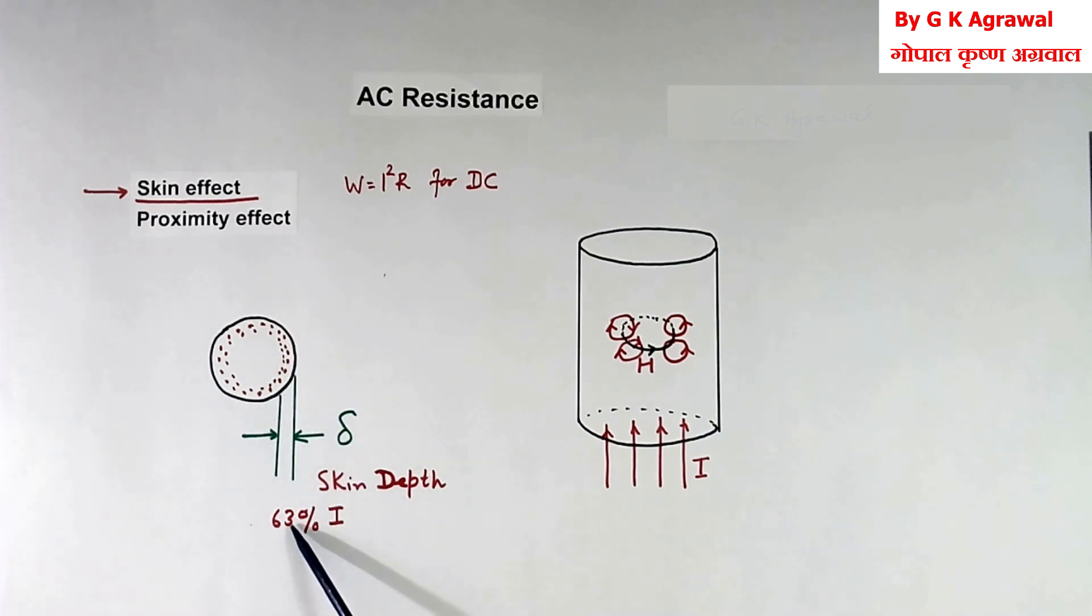In this distance, 63% current flows, the remaining will be inside.